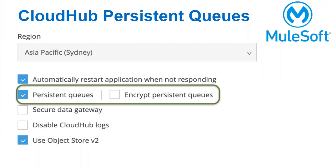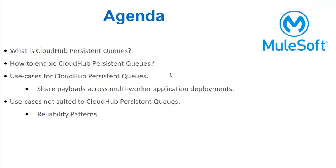Hi friends, welcome back. In today's session we are going to discuss a very important topic called CloudHub Persistent Queues. This option is available per application and it has limitations as well as useful use cases where we can take advantage of it. The agenda covers what it is, how to enable it, and in which use cases we should and should not use it.